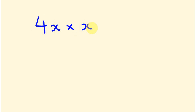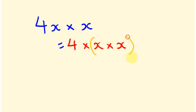Another type of multiplication: what if we multiply 4x by x? Write it out as 4 times x times x. Notice that x times x is x squared — a number multiplied by itself is squared. So 4 times x squared gives us 4x squared.